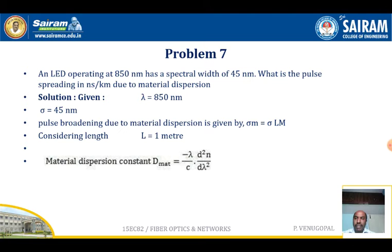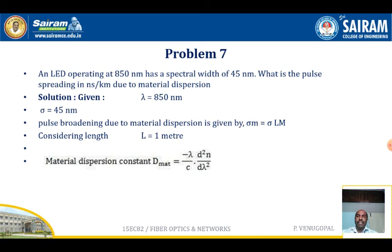Problem: An LED operating at 850 nanometers has a spectral width of 45 nanometers. What is the pulse spreading in nanoseconds per kilometer due to material dispersion? Given: wavelength lambda = 850 nanometers and spectral width sigma = 45 nanometers.